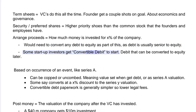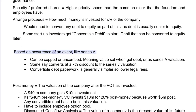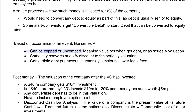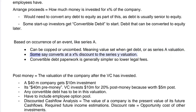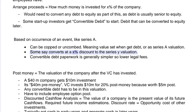Some startup investors get convertible debt to start — debt that can be converted to equity based on the occurrence of an event, like a Series A round. Convertible debt can be capped or uncapped, meaning the valuation is either set when the debt is issued or determined at the time of the next round's valuation. Some convertible notes convert at a discount to the Series A valuation.